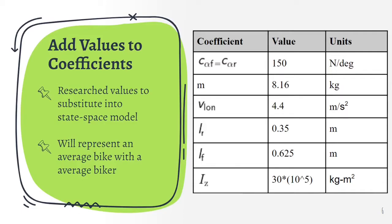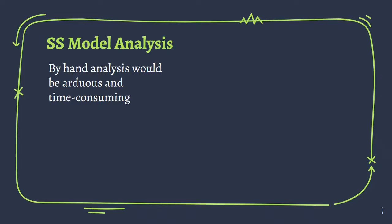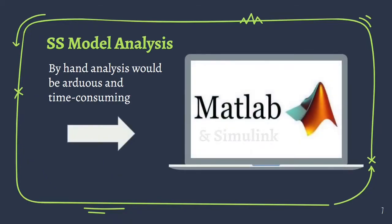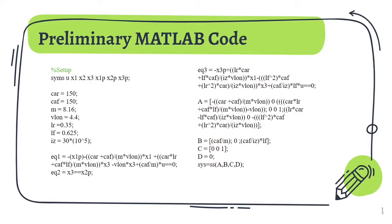These values were researched and they are meant to represent the average bike and the average biker. Now we can do our state-space analysis. Doing the calculations by hand would be difficult since it's both arduous and time-consuming. As a result, we will use a control engineer's best friend, MATLAB and Simulink. So to start our MATLAB analysis, we first need to assign variables to our state-space model, and we can assign our research values to the coefficients.